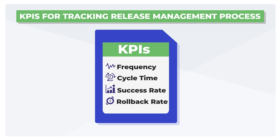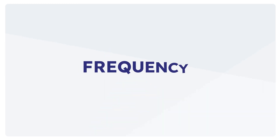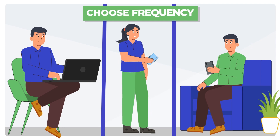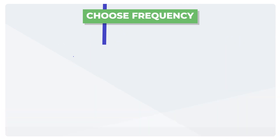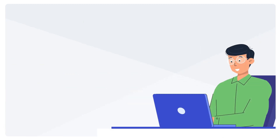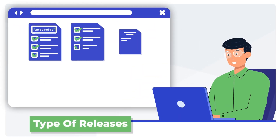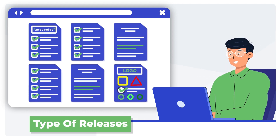Frequency — the simplest of all — is how often a new release goes live to your end users. Whether you want it measured per month, quarter, or year is up to you. However, you will want to consider the type of releases when coming up with the frequency number.